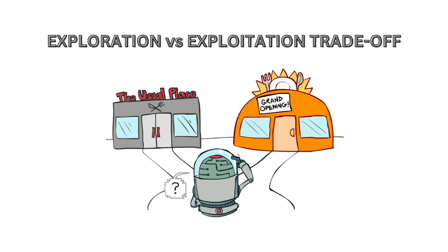Initially, our reinforcement learning agent will explore the environment to gather information about it. Later in training, once our agent is well-trained, we can exploit the agent. When we exploit, we have a good chance to get a good reward. If we only explore, we can get good or bad rewards. The balance between explore and exploit is again a hyperparameter — this is the exploration and exploitation trade-off.